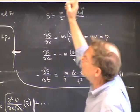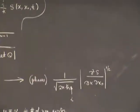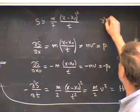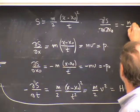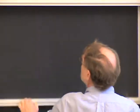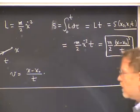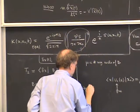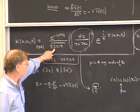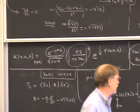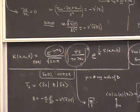For the Van Vleck formula prefactors, we need d^2 S / dx dx_0. Differentiating the expression for dS/dx = M(x - x_0)/t with respect to x_0 gives d^2 S / dx dx_0 = -M/t. So for the free particle, the factor |d^2 S/dx_0 dx|^{1/2} turns into sqrt(M/t). Combined with the 1/sqrt(2 pi h-bar) factor, we get exactly the prefactor from exact quantum mechanics: sqrt(M / 2 pi h-bar t).